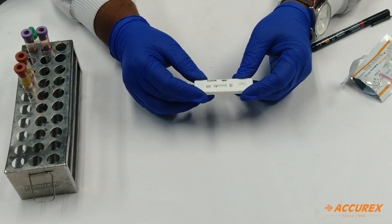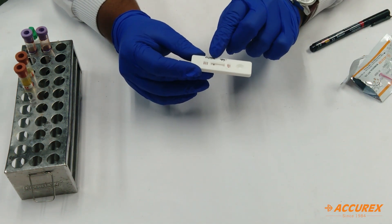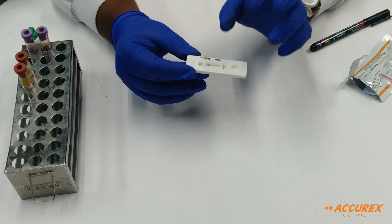So now the 20 minutes have been completed. You can see the result. So the band has appeared near the control line and there is no band appeared at PV or PF. It means the test is negative.